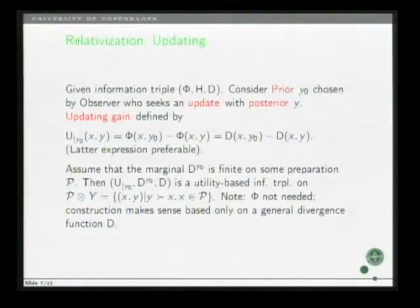And if there are no problems with infinity, you get the simpler expression, divergence given Y zero minus divergence given the posterior Y. Now, if you assume that there are no problems with infinity, by assuming that the marginal function D fixing Y zero is finite on some preparation under consideration, then you have a new utility-based information triple, where the two functions which are corresponding to entropy and redundancy as I started, the explanations are now divergence-type concepts.